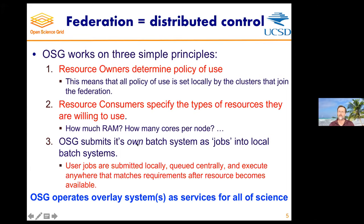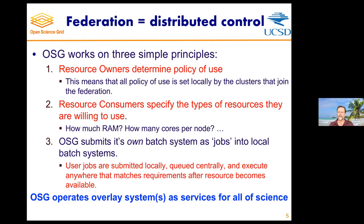How do we do this? We submit our own batch system as jobs into the local batch system, effectively making one HTCondor batch system out of many batch systems. Those many batch systems can be anything under the sun and we'll work with that. User jobs are submitted locally, queued centrally, and execute anywhere that matches the requirements after a resource becomes available. You will never be queuing somewhere and have those people decide they don't want you — that will never happen. OSG operates this overlay system as a service for all of science.